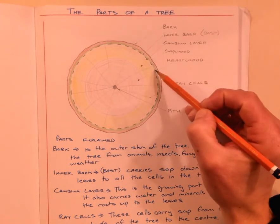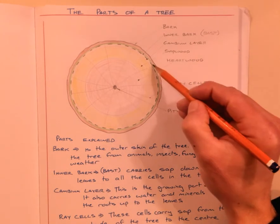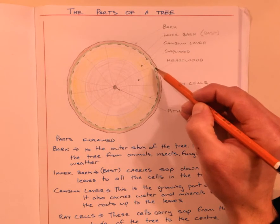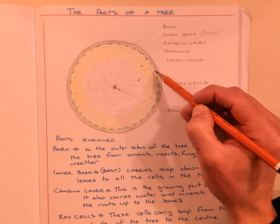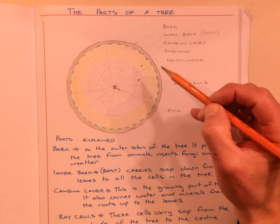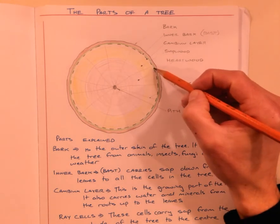This broken line around the ring on the outside is what we call the cambium layer. The cambium layer is the growing part of the tree. It also has a second job - it carries water and minerals from the roots up to the leaves, carrying the food up the tree for photosynthesis to happen.